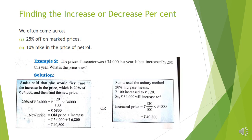Next topic is finding the increase or decrease percentage. We often come across '25% off on marked price' — off means decrease — or '10% hike in the price of petrol' — hike means increase. Let us do an example. The price of a scooter was Rs 34,000 last year. It has increased by 20% this year. What is the price now? We can solve this in two ways. Amita said she would first find the increase in price, which is 20% of Rs 34,000, and then find the new price.